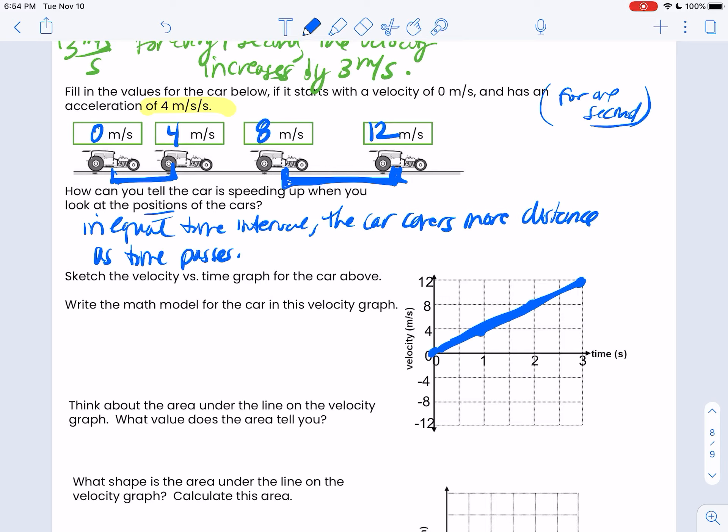So the math model would be if I start with my y equals mx plus b. I know my y is velocity. I'm going to call that one v final. My slope was the acceleration, 4 meters per second per second, times the time plus the initial velocity, which is 0 meters per second. So notice this looks just like the one for position, except for now, it's about velocity.